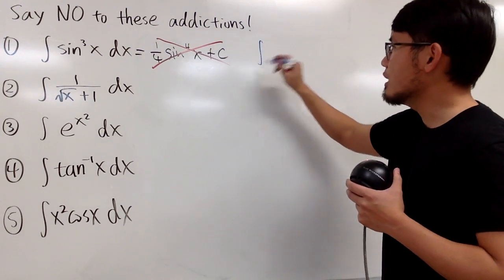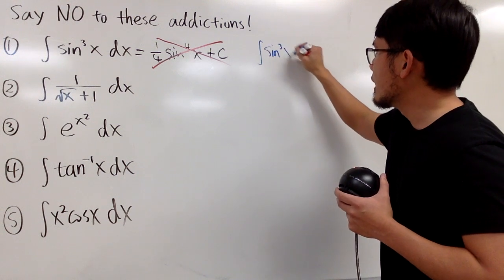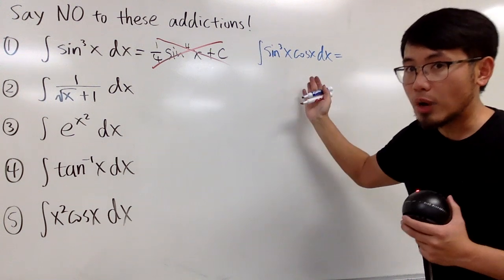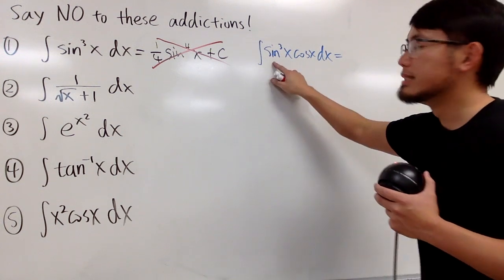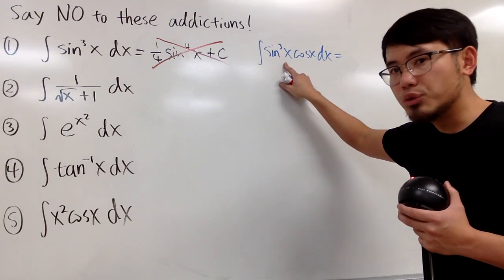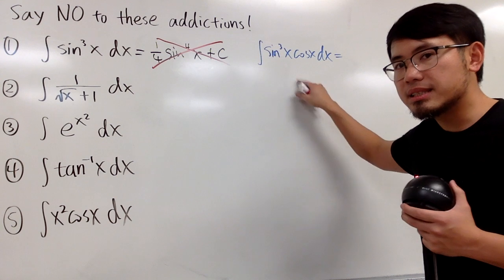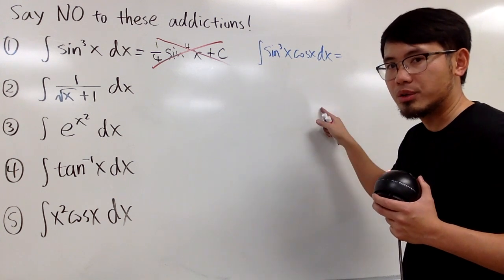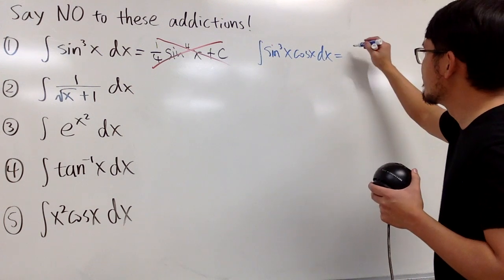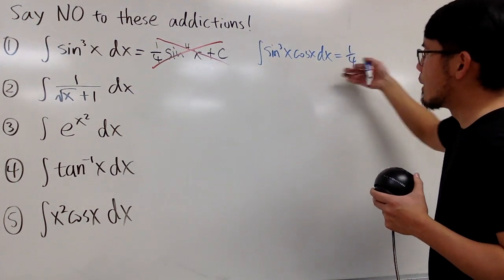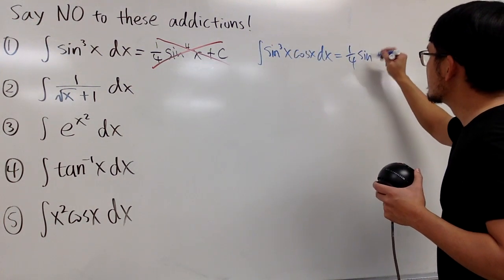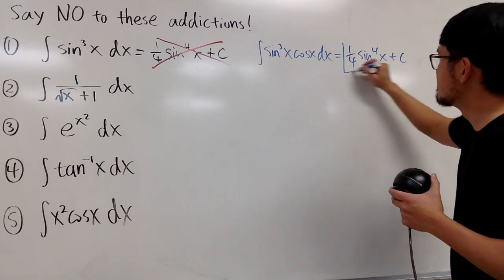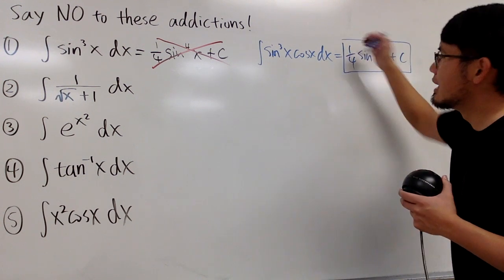If you have the integral of sine to the third power of x with cosine x right here, you can let u equal to sine x, and then du is cosine x dx. You can integrate this in the u world as u to the third power du, and you end up with one-fourth u to the fourth power. Since u is sine, you end up with this answer right here.